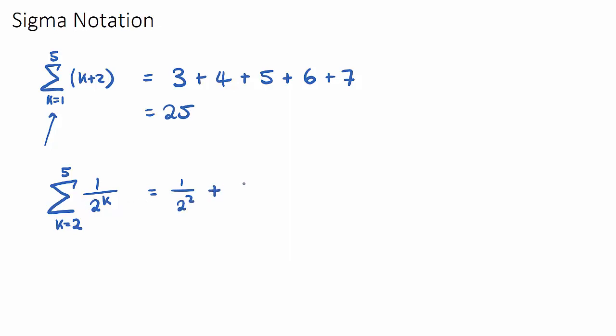And then we have k equals 3. It'll be 1 over 2 to the power of, now k is 3, plus 1 over 2 to the 4, and we stop once k is our top number. So plus 1 over 2 to the 5.